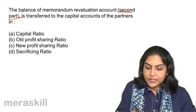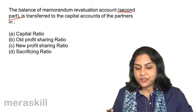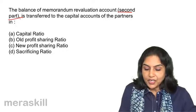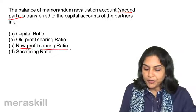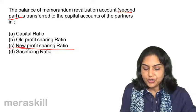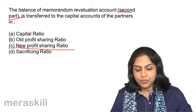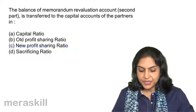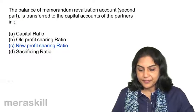The first half is transferred in the old ratio and the second half is in the new profit sharing ratio. The correct option should be C.